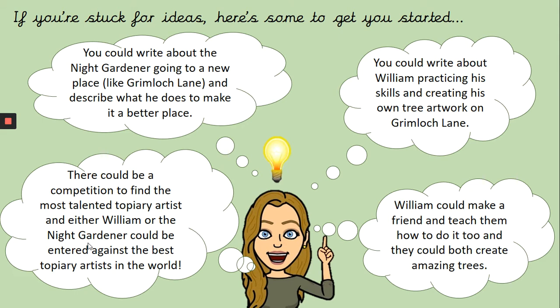If you are stuck for ideas, here are some to get you started. As I said, these are just here to help you. If you have your own ideas, please do use them. My ideas are just to get your brain going, just to give you a little bit of inspiration. You might take an idea and change it slightly or build on it — it's up to you completely. My first suggestion is that you could write about the Night Gardener going to a new place, somewhere like Grimlock Lane, somewhere that's a bit miserable. Describe what he does to make that place better — how does he change it? Think about what he did before, think about new designs he could do, and how is he going to make this place a better place to live?